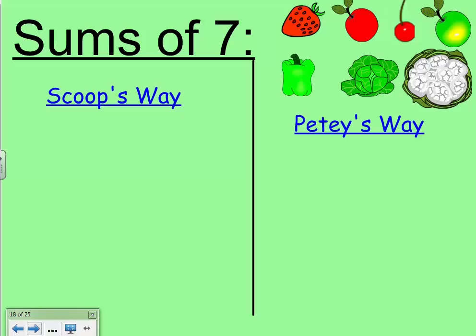So, Petey and Scoop are gonna look at different ways they can make 7 from fruits and vegetables. Petey, what's one way you see how to make 7?